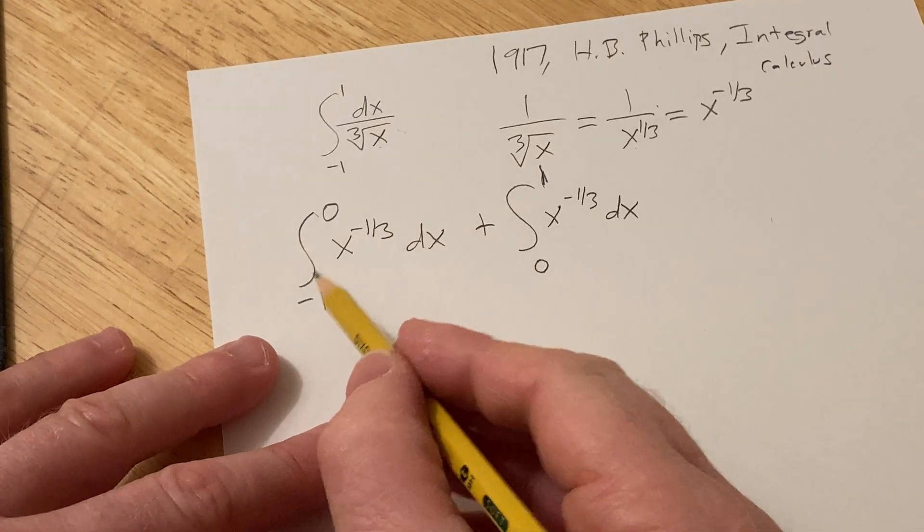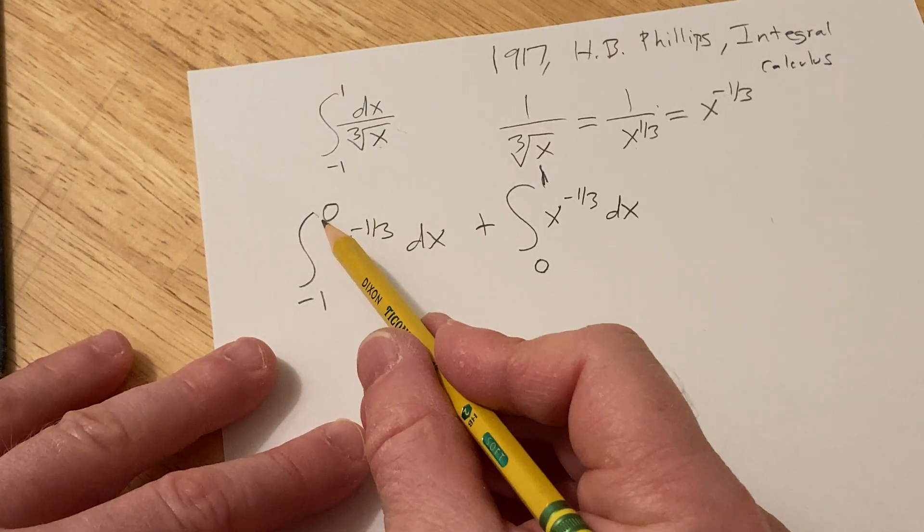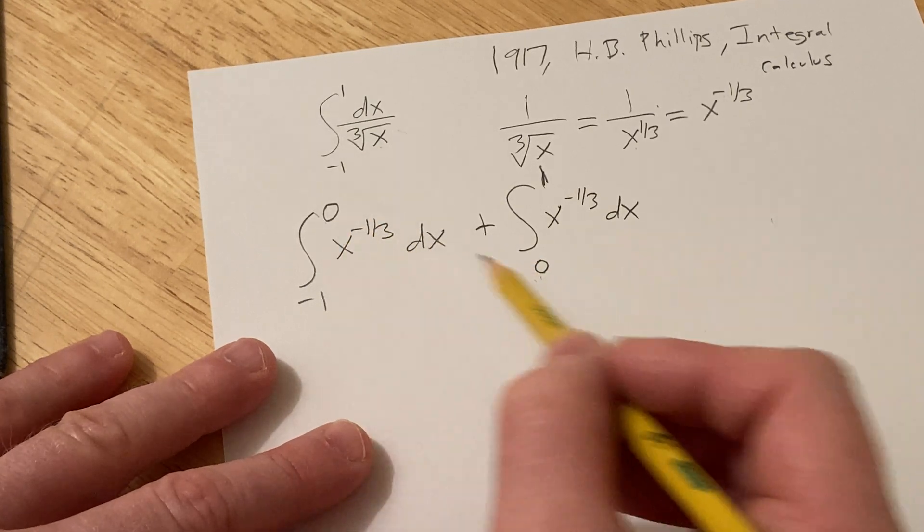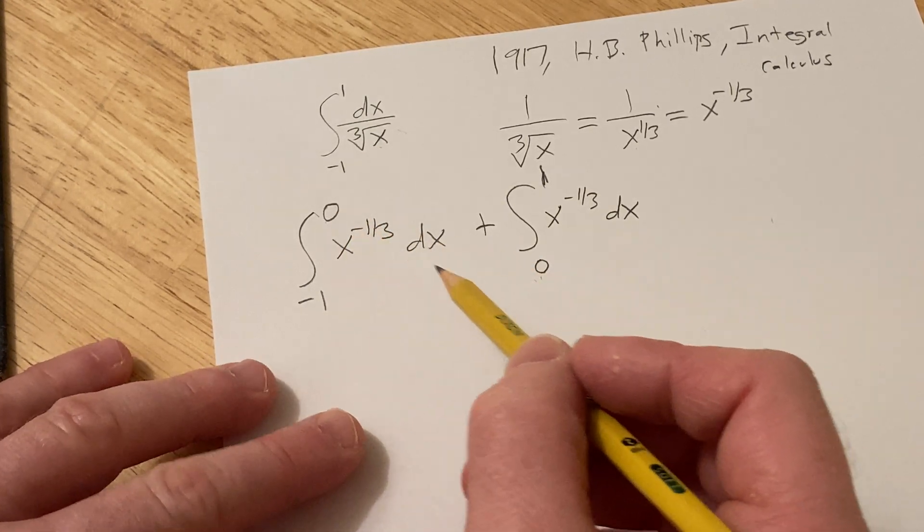The next thing we want to do is replace these zeros, because those are the problem points, with variables.